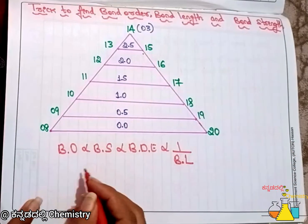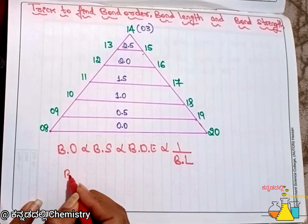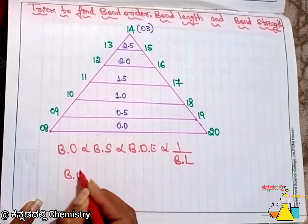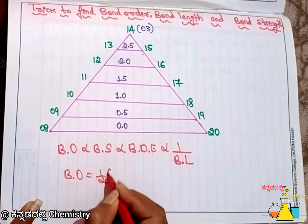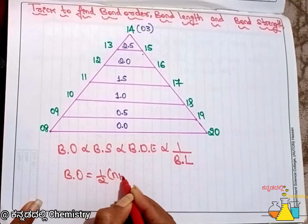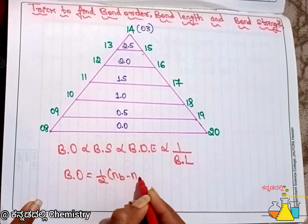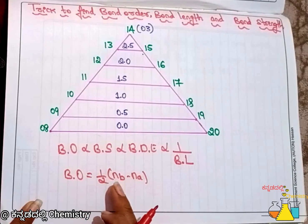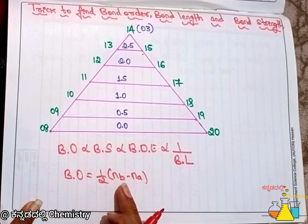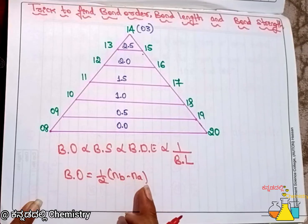Bond order is equal to one-half into (nb minus na), where nb is the number of electrons present in the bonding molecular orbital and na is the number of electrons present in the anti-bonding molecular orbital.